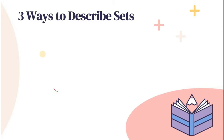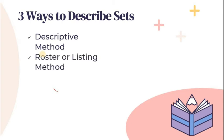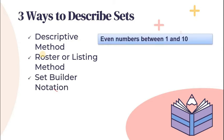Let's proceed to the next topic. There are three ways to describe sets. We have descriptive method, roster or listing method, and set builder notation. When we say descriptive method, we use words to describe a set — word description. For example, even numbers between 1 and 10. As you can see, words ang ginagamit. Now, ano ba yung mga even numbers between 1 and 10? By the way, pag sinabi natin even numbers, those are numbers that are divisible by 2 or multiples of 2. So between 1 and 10, yung mga even numbers, we have 2, 4, 6, 8, and 10.